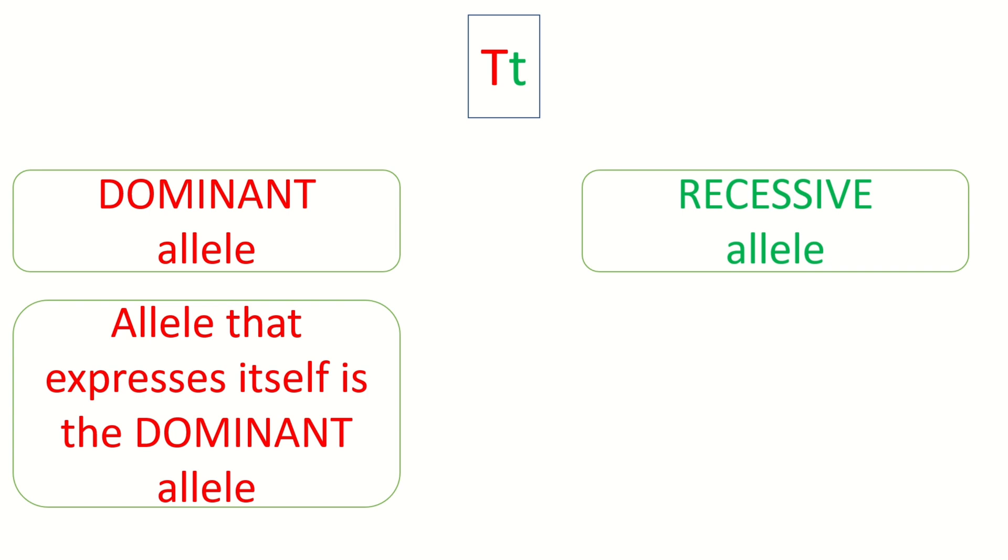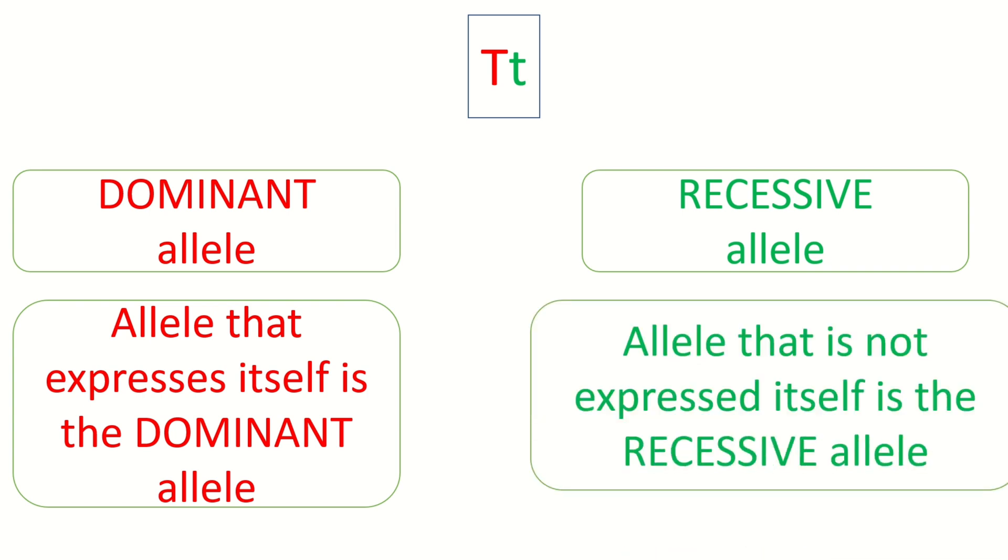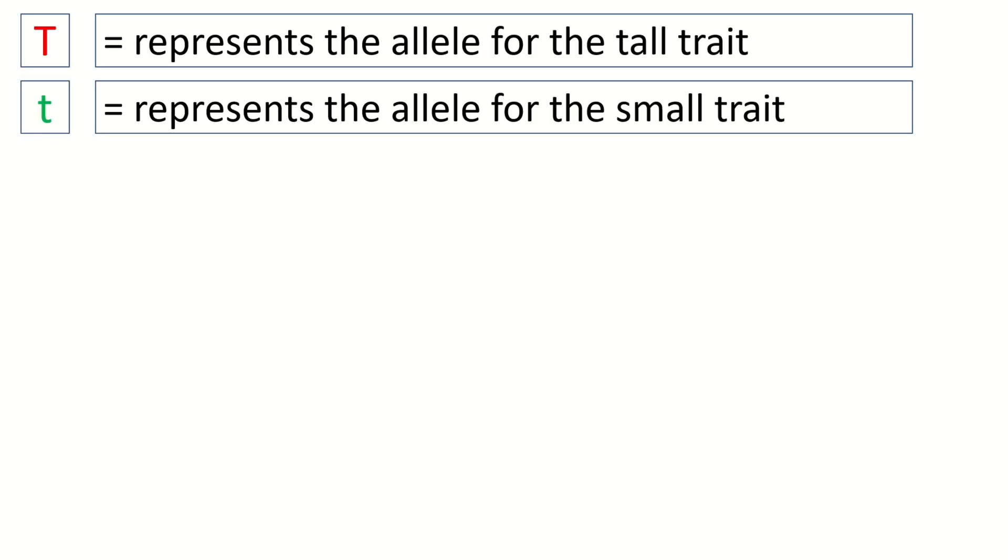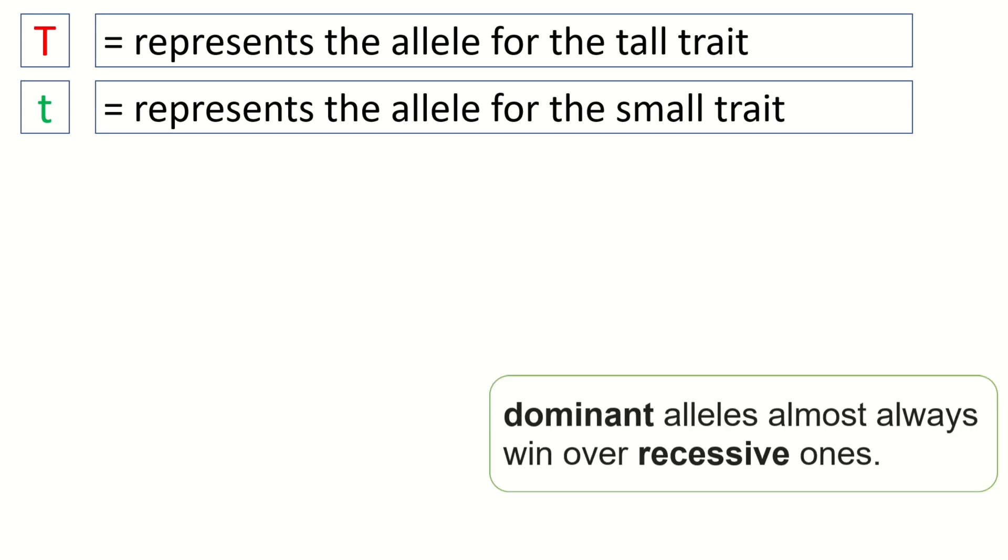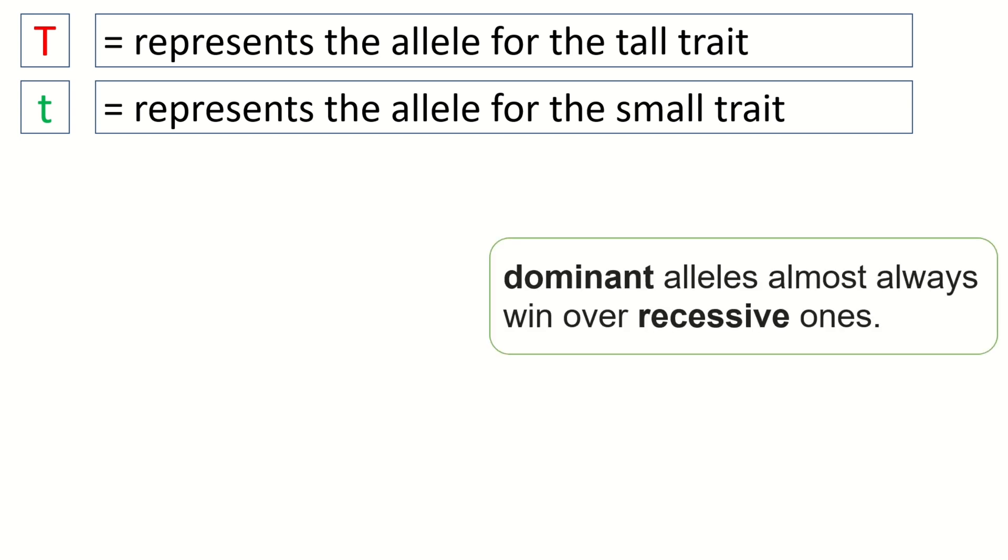The allele that expresses itself is the dominant allele. The allele that is not expressed is the recessive allele. Dominant alleles almost always win over recessive ones.